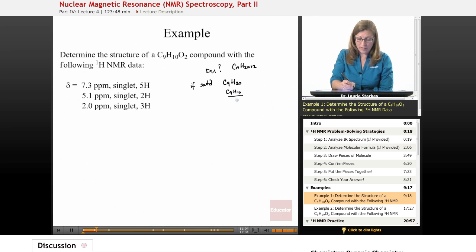So we have 10 missing hydrogens, and every two missing hydrogens is a degree of unsaturation or a site of unsaturation, so we have 5 DU. So our formula when we're done has to account for all five of those.